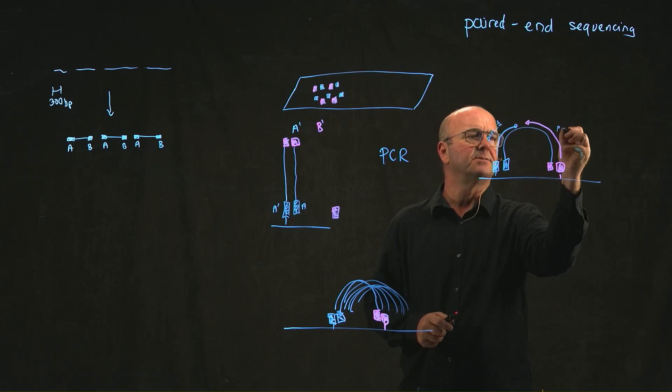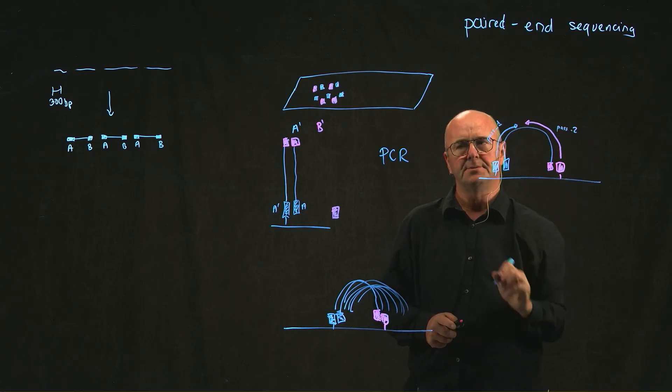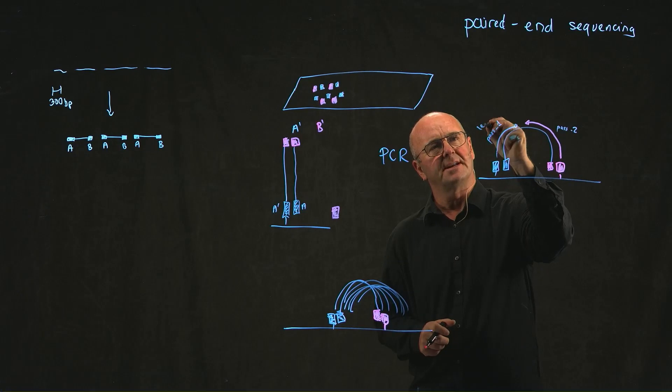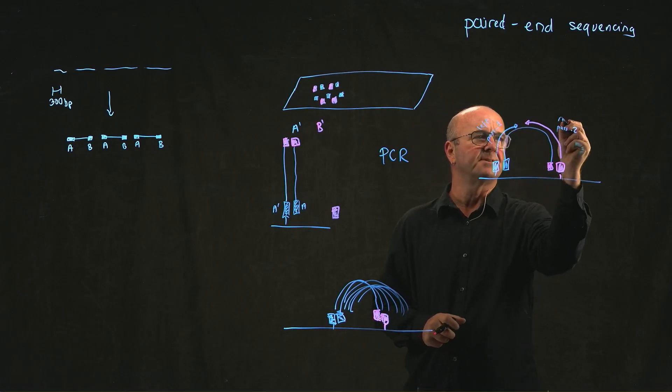And this is called pass two. This is often called the left reads, and these are often called the right reads.